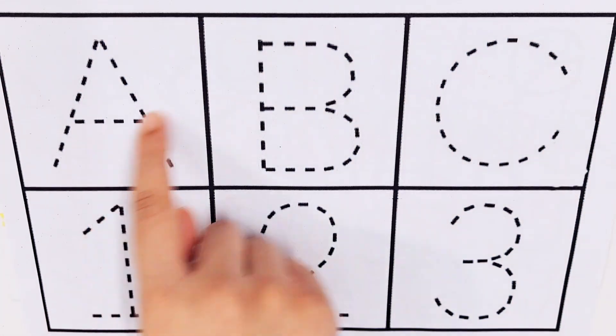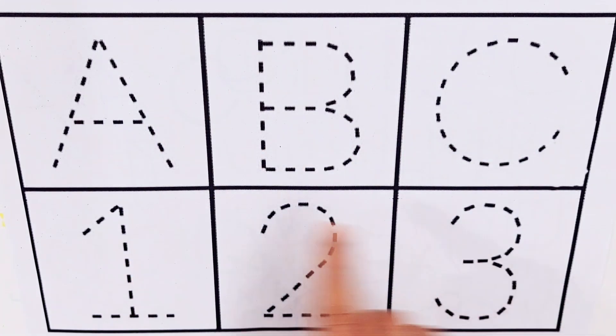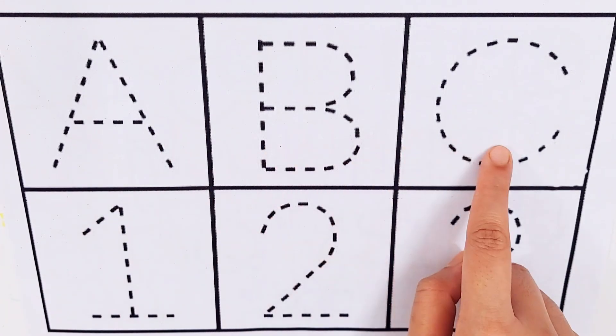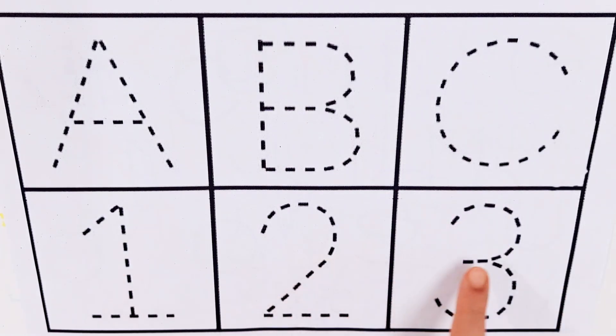Let's try to learn some alphabets and numbers: A, B, C, one, two, three.